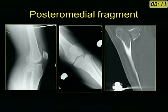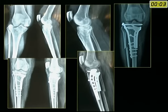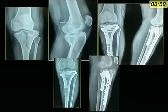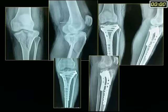Beware of the posteromedial fragment — identify it and buttress it. It requires a posteromedial buttress and a simple T-plate does the job. A T-plate has been used successfully to buttress the posteromedial coronal split.